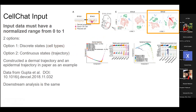The continuous states example in the paper uses epidermal or dermal cells. CellChat has trajectory and pseudo-time analysis built in, and it groups cells into continuous states, but it still treats them as discrete things and the downstream analysis is all the same. So they do have a nice pseudo-time analysis, but everything downstream is the same.